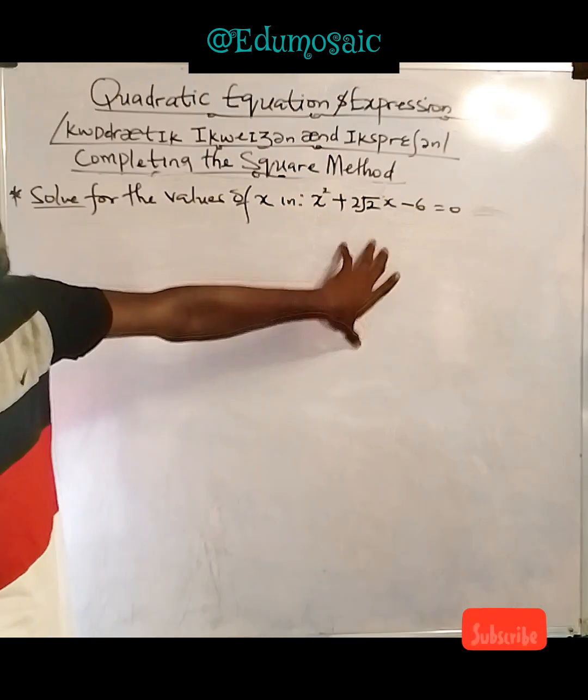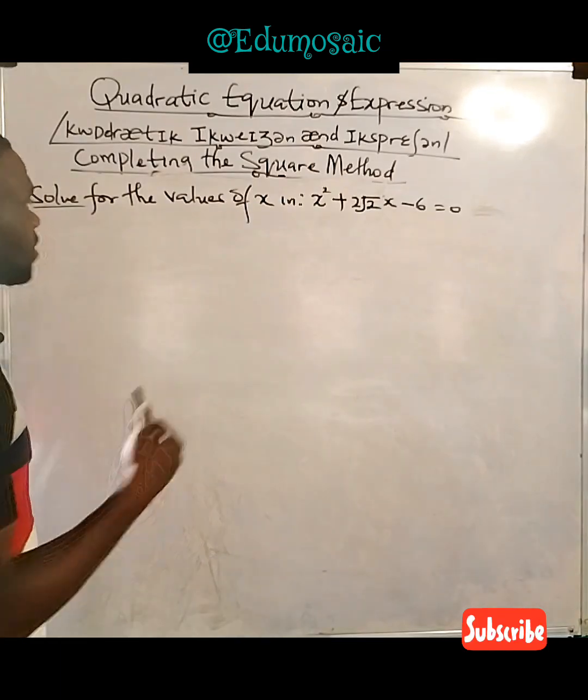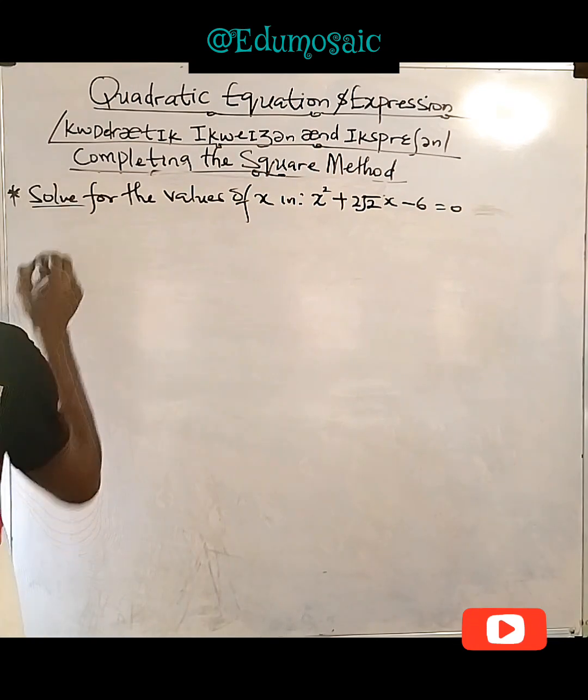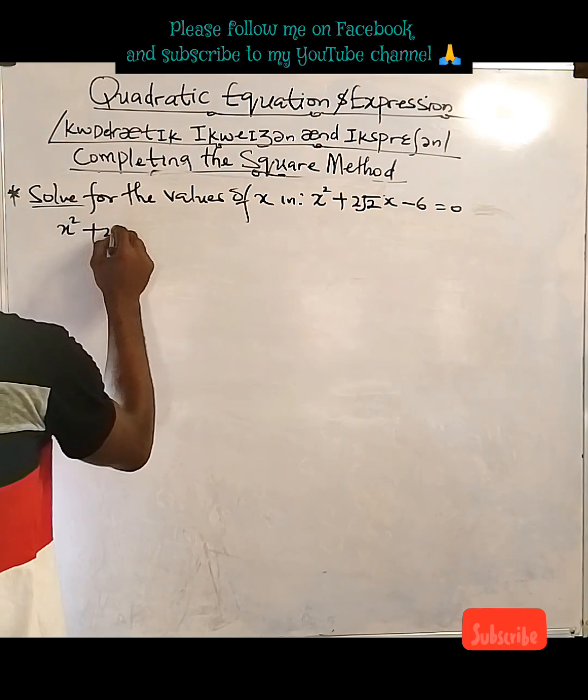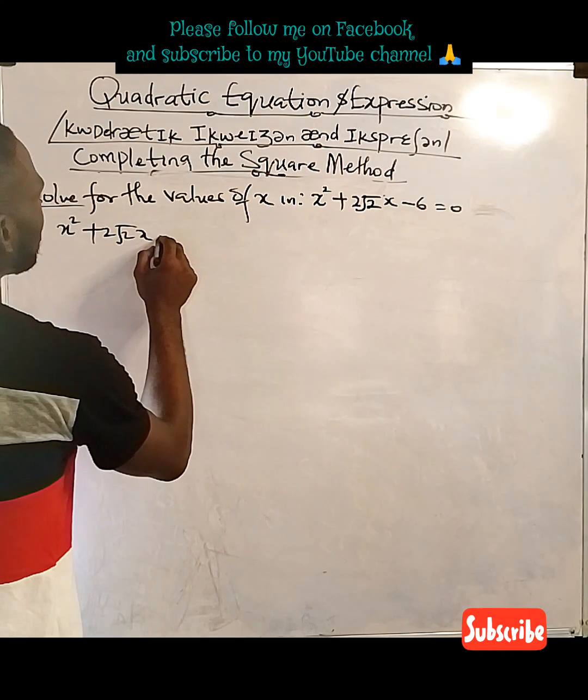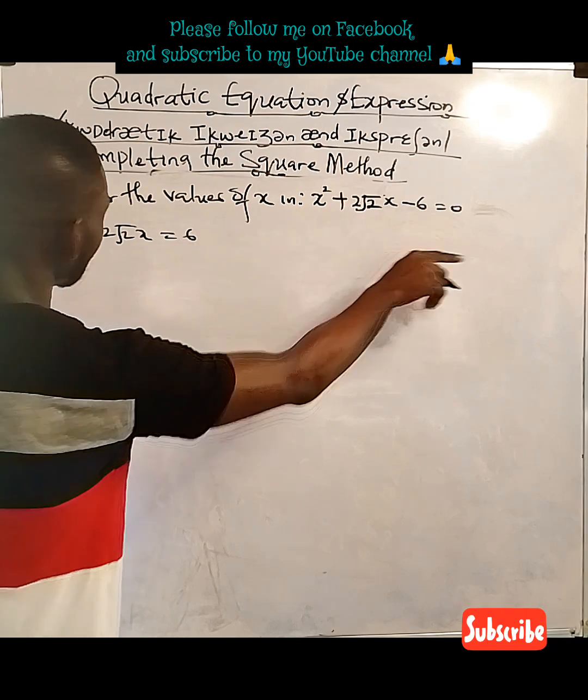How do we solve this? The first thing we are going to do is send this over to the other side, so x squared plus 2 root 2 x equals to 6. Minus 6 crosses to the other side and becomes plus 6.